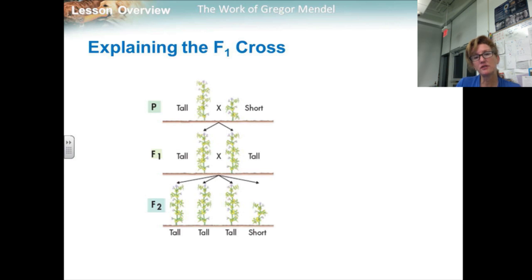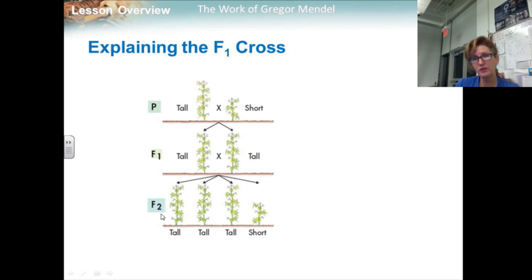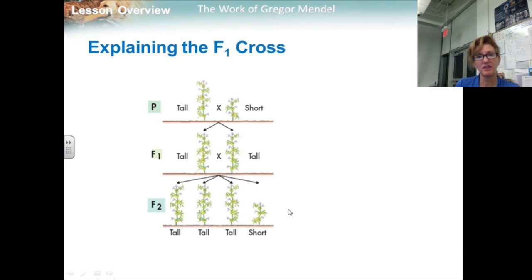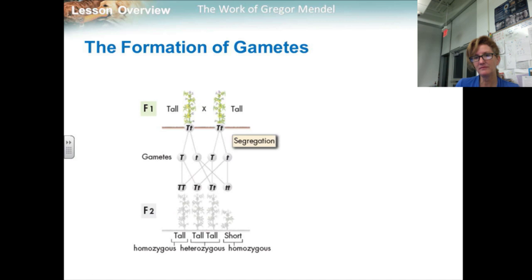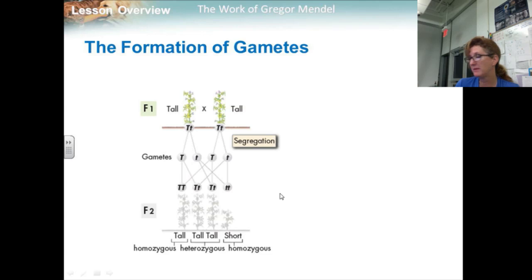Mendel assumed that a dominant allele had masked the corresponding recessive allele in the F1 generation. The reappearance of the recessive trait in the F2 generation indicated that at some point the allele for shortness had separated from the allele for tallness. This led to the question: how did the separation or segregation of alleles occur? Mendel suggested that the alleles must have segregated from each other during the formation of the sex cells, or gametes.